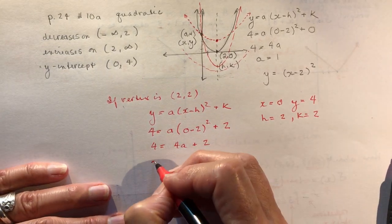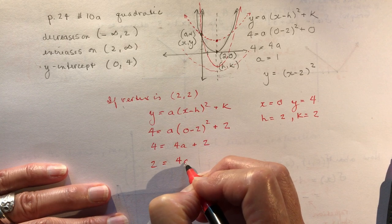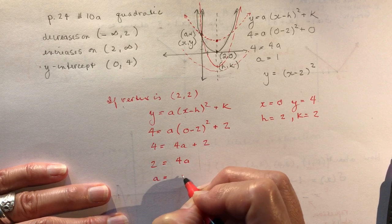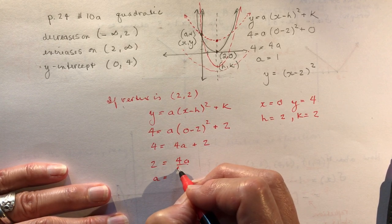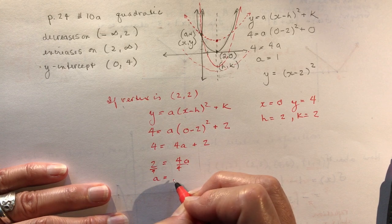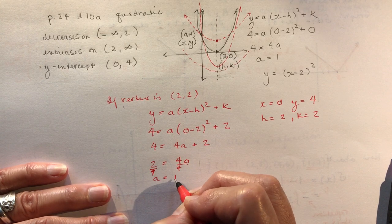I have to bring 2 to the other side of the equation. 2 is equal to 4a. And a is equal to, make sure you divide the right way here. So many people mix this up. So a is equal to 1 half.